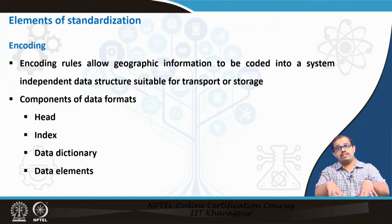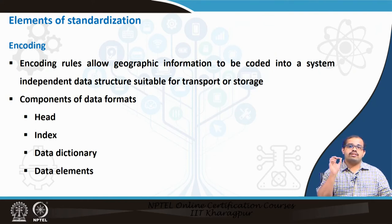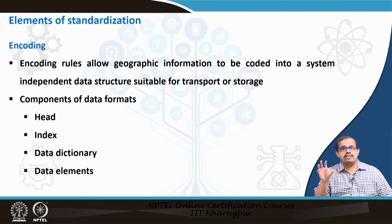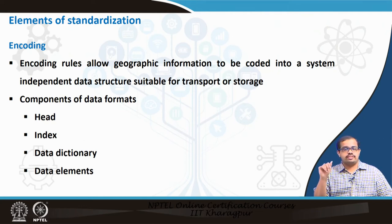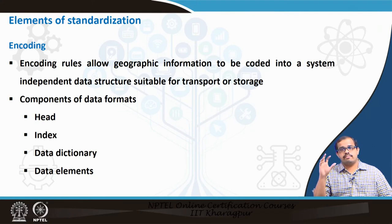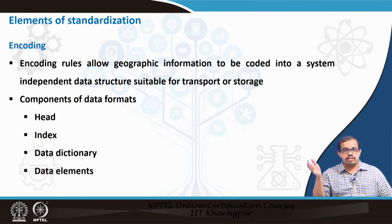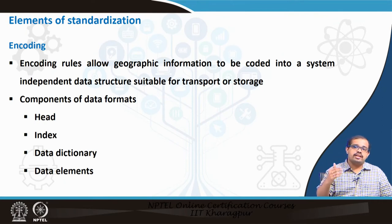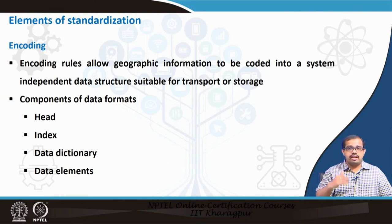The components of encoded data would be a header, an index, a data dictionary, and data elements. These are all very important for having data stored in a particular structure usable by any GIS software. For example, take JPEG — the first few lines of any JPEG image define its total header, what kind of index it has, number of rows and columns, which means data dictionary and data elements mentioned in the first few lines. Your program should be able to read and capture that, then know from where to start reading the image.